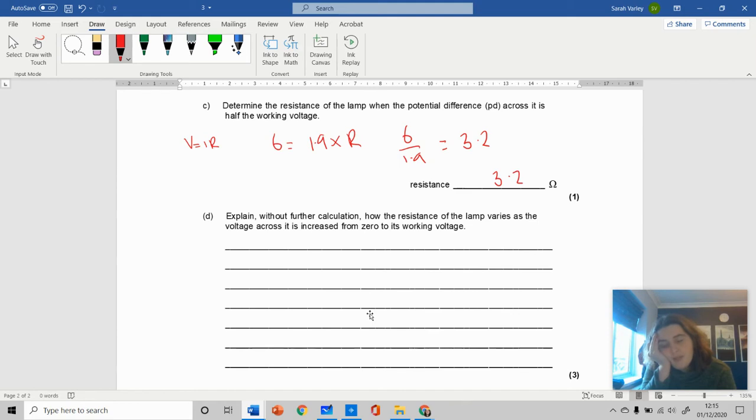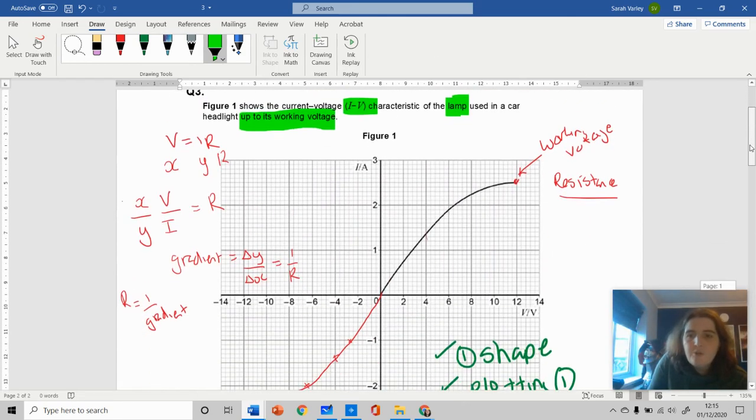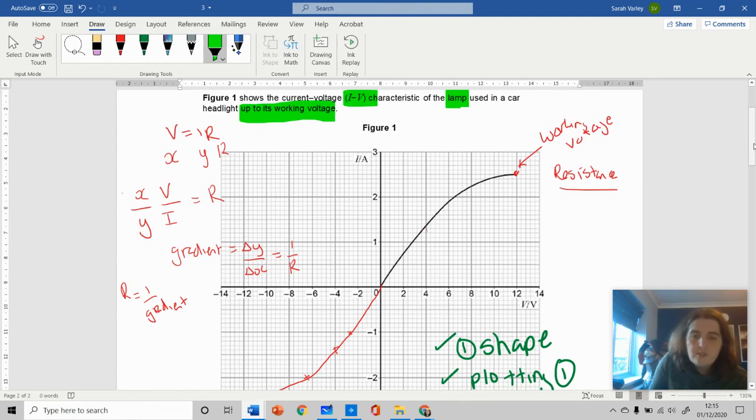Explain how the resistance of the lamp varies as voltage goes from zero to its working voltage. This is where my analysis at the start is really important. With IV characteristic graphs, they normally want you to comment on the resistance. The gradient is becoming less steep, and resistance is one over the gradient. So if the gradient is becoming less steep, the resistance is increasing.